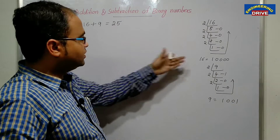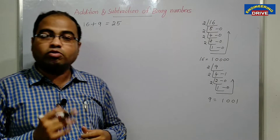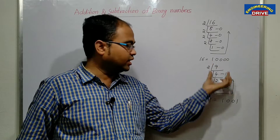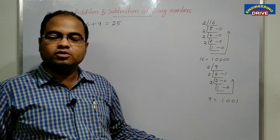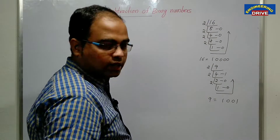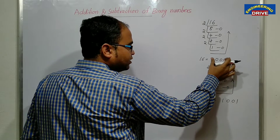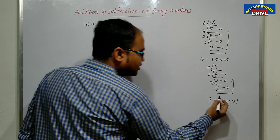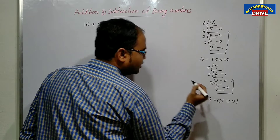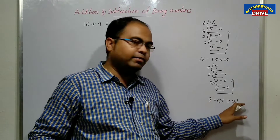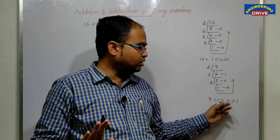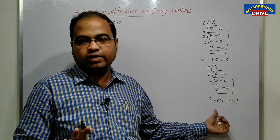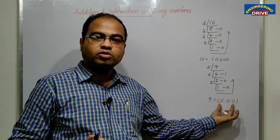Now let us add the binary form of 16 with the binary form of 9. Notice that 16 in binary has 5 bits, whereas 9 in binary has only 4 bits. We need to make them equal, so we prefix a zero to 9's binary form. This doesn't change the value — adding a zero on the left side doesn't change the value. Now both numbers have 5 bits.